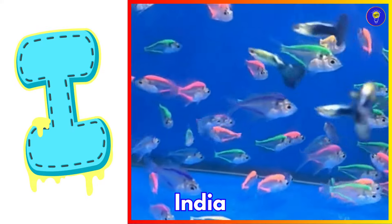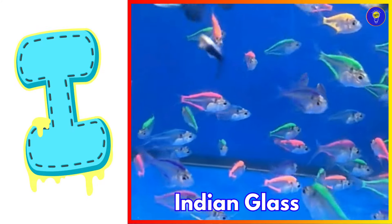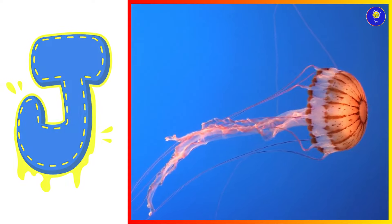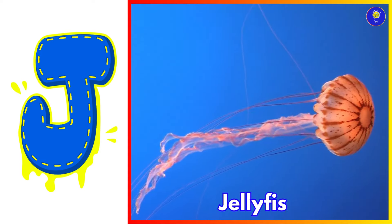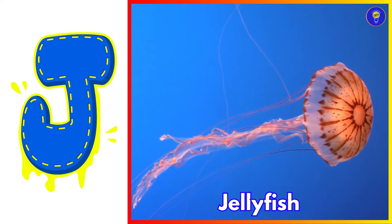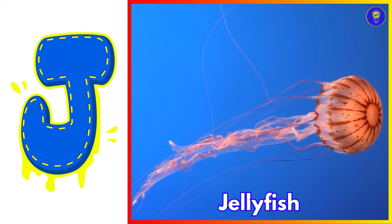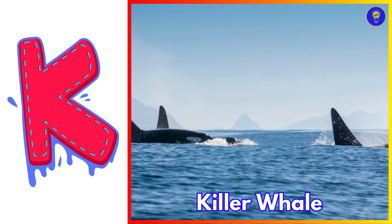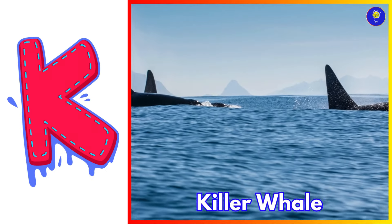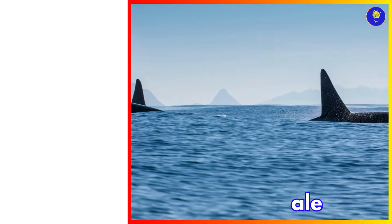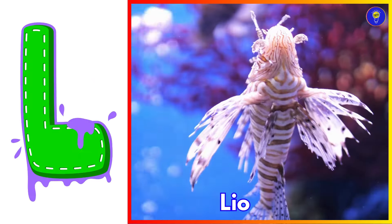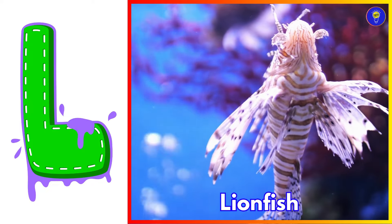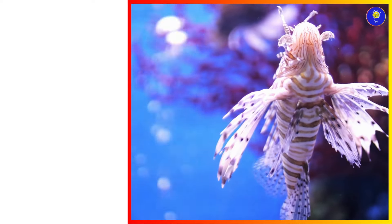I is for Indian glass fish. Eh, Indian glass fish. J is for jellyfish. Juh, jellyfish. K is for killer whale. Kuh, killer whale. L is for lionfish. Luh, lionfish.